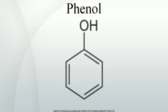Phenol exhibits keto-enol tautomerism with its unstable keto tautomer cyclohexadienone, but only a tiny fraction of phenol exists as the keto form. The equilibrium constant for enolization is approximately 10⁻¹³, meaning that only one in every 10 trillion molecules is in the keto form at any moment. The small amount of stabilization gained by exchanging a C=C bond for a C=O bond is more than offset by the large destabilization resulting from the loss of aromaticity. Phenol therefore exists entirely in the enol form.